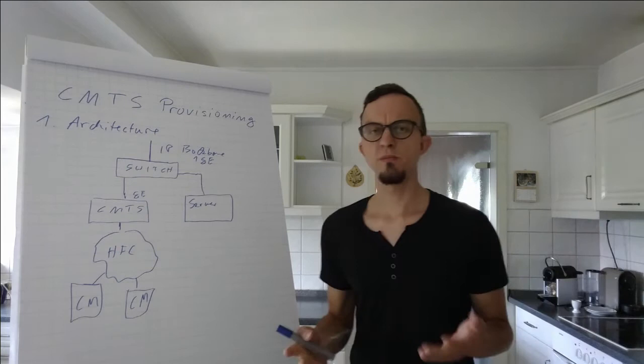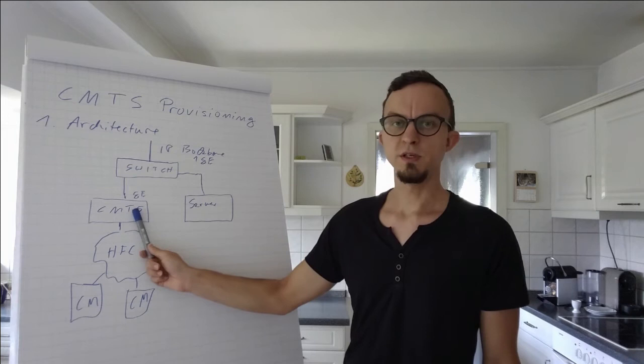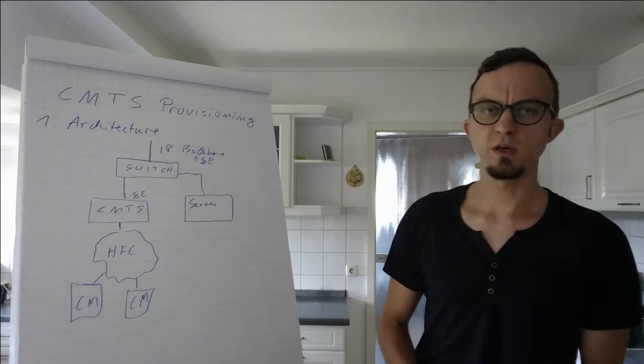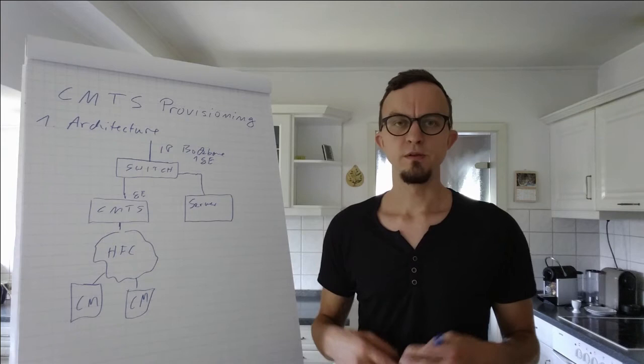For example, when the first cable modem is connected to your CMTS, it will request via DHCP and the CMTS forwards the DHCP request to the provisioning server. The provisioning server will reply with how they can get online. I have made a separate video about what the process itself means and there I jumped into the process of a cable modem registration.